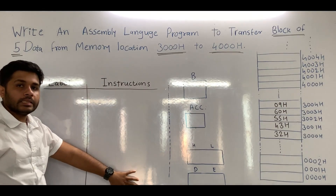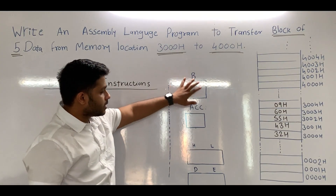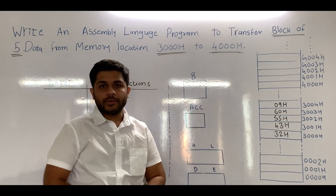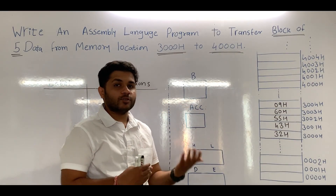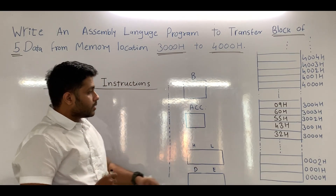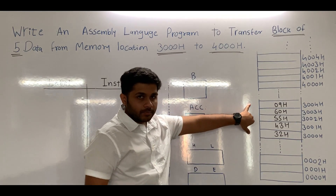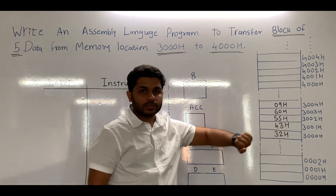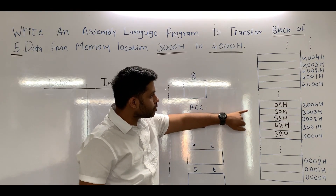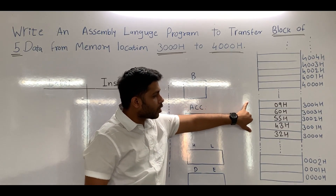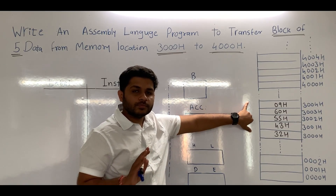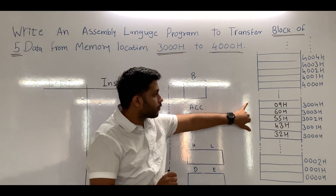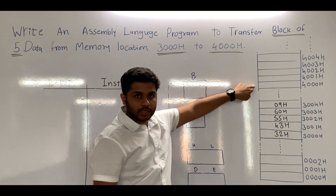Here we are going to write the assembly language program. These are some registers of the microprocessor and this is the memory. The memory resides outside of the microprocessor. In the question, there are 5 data — a block of 5 data is already stored from 3000H. So from 3000H to 3004H, the block of 5 data is already stored. We are asked to transfer this block of data from 3000H to 4000H.